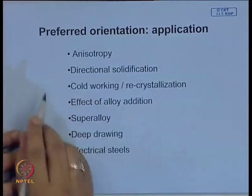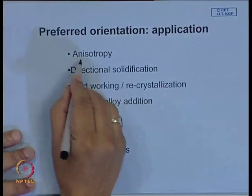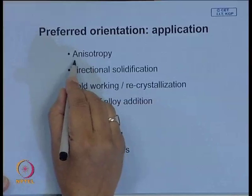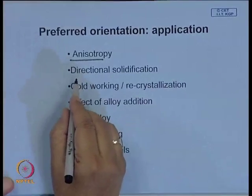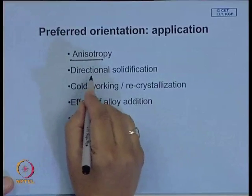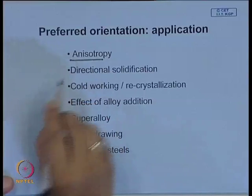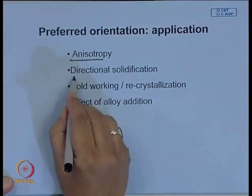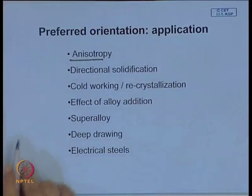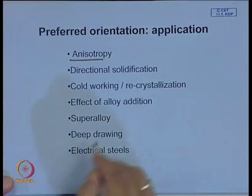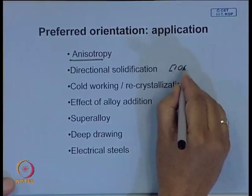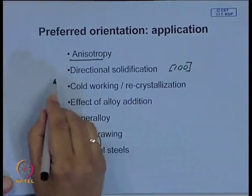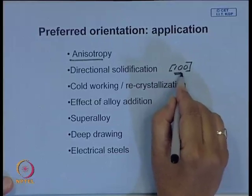Under the topic of preferred orientation, if crystals are not randomly oriented, the properties will not be the same along all directions of the product. One way to get preferred orientation is the process of directional solidification, where crystals grow preferentially along a particular direction. In cubic crystals, particularly face-centered cubic alloys, the cube direction has the maximum growth rate, making it quite easy to produce crystals with this kind of texture or preferred orientation.